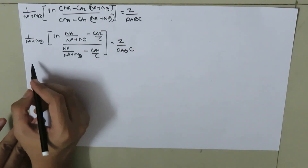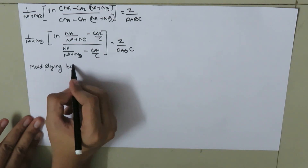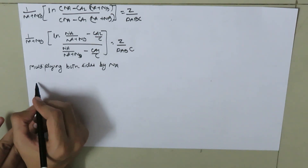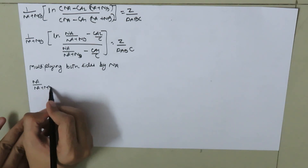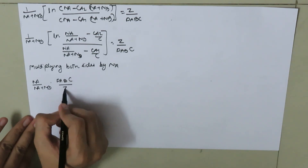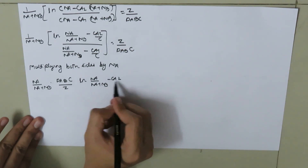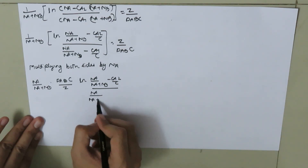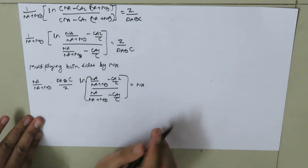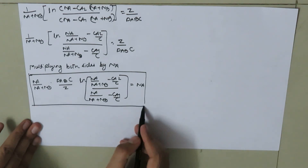Multiplying both sides by N_A, we arrive at the general equation: N_A equals [N_A / (N_A plus N_B)] times (D_AB times C / Z) times ln[(N_A/(N_A+N_B) minus C_A2/C) / (N_A/(N_A+N_B) minus C_A1/C)]. This is our general governing equation, which we will now apply to two special cases.